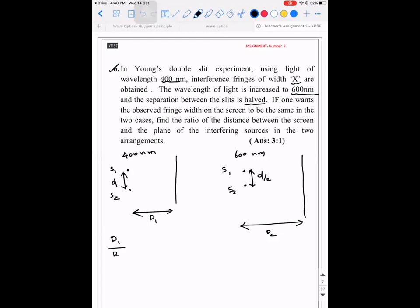So we will take d1 by d2. To get d1 by d2 guys, but what are they expecting? The expectation is something else. The fringe width is supposed to remain the same. So we will go with it.